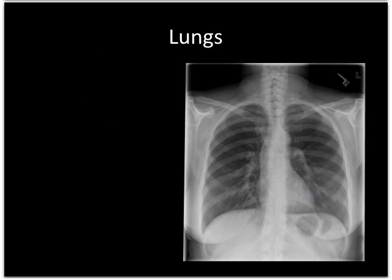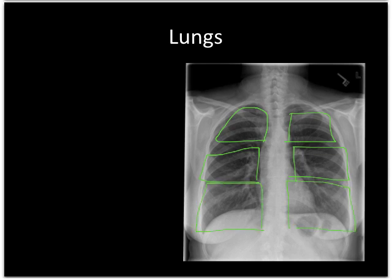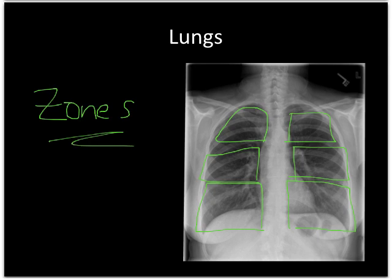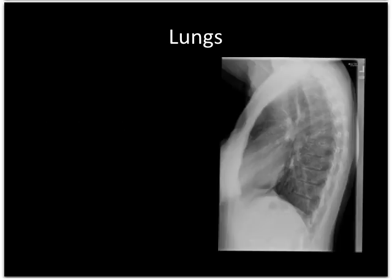Before I leave the lung parenchyma, I want to compare the zones of both lungs — the upper zones left and right, middle zones left and right. These should be very symmetrical, and sometimes just doing that comparison at the end will help you spot an additional abnormality. I then turn my attention to the lateral study, doing the same sweep of the lung parenchyma as on the PA study and looking for the same abnormalities.